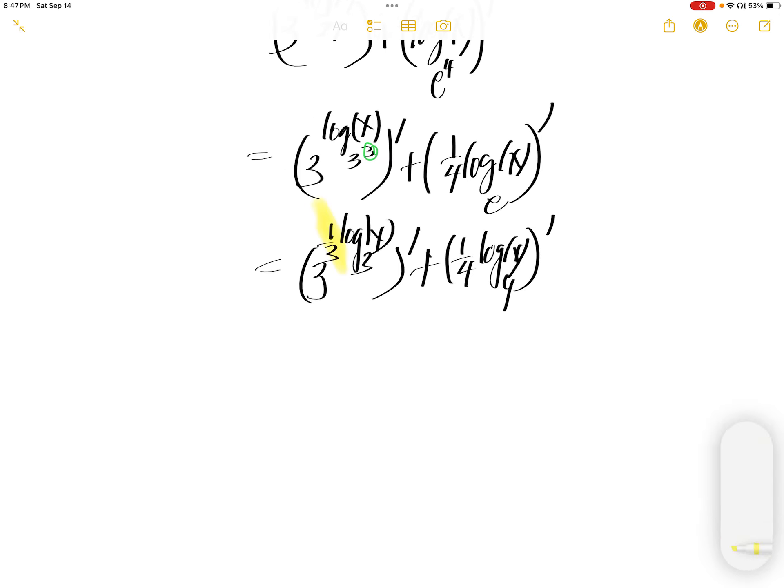Now this, one third, you can move inside the argument of the log. So you use 3 to the power log to base 3, we get x to the one third, and then we get 1 quarter, log x to the base e.